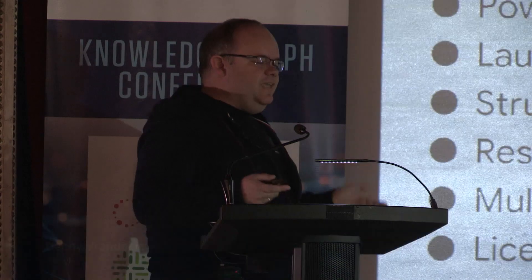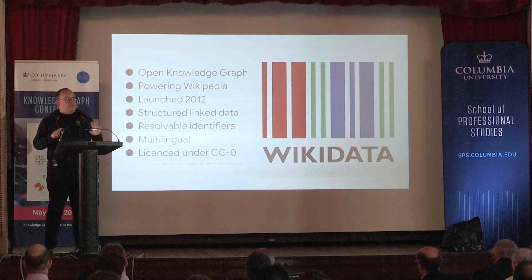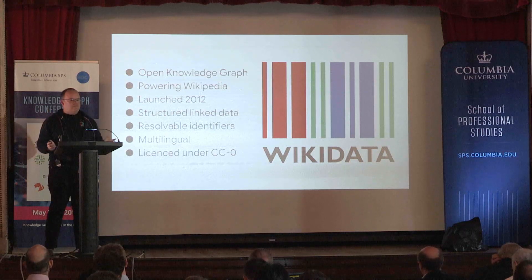It is kind of hard to access this information traditionally. You have to go and look for the cities and then write this down. And this is where Wikidata enters in. Wikidata is an open knowledge graph. It's powering Wikipedia and many other projects, launched a few years ago, and provides structured linked data with resolvable persistent identifiers. It's all multilingual, and all of this is available in the CC0 license, so you can use it for anything you want.